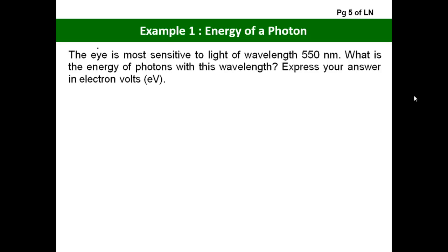Let us look at example 1 of our lecture. In this question, the eye is most sensitive to light of wavelength 550 nanometers. You are asked to find the energy of the photon associated with this wavelength, lambda, and then express your answer in electron volts.